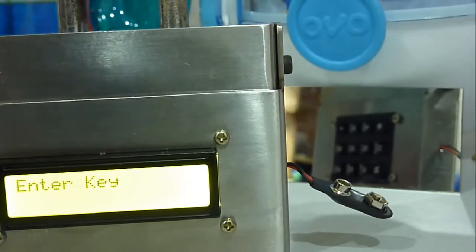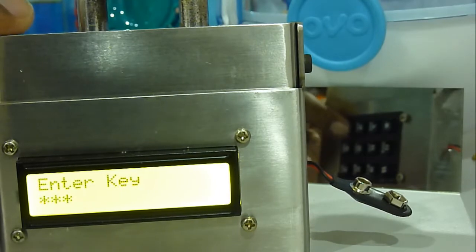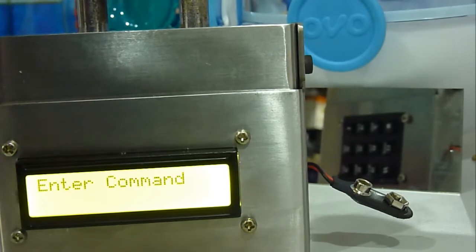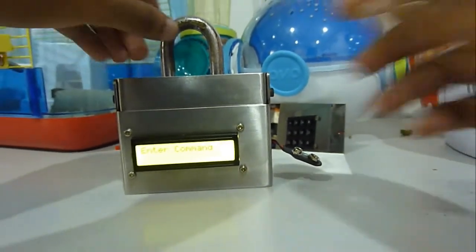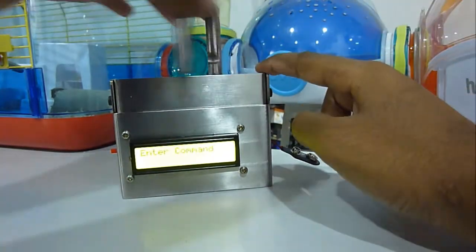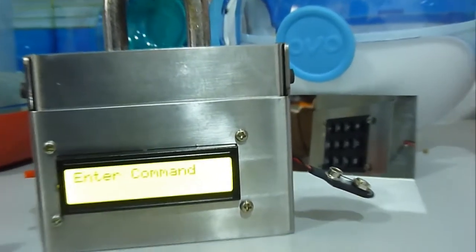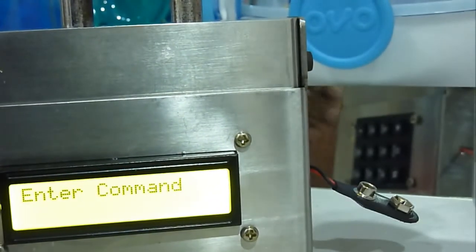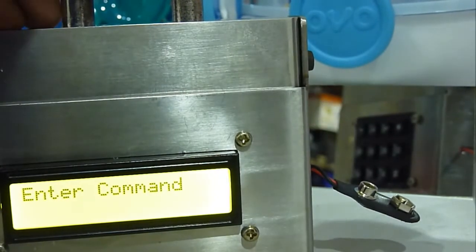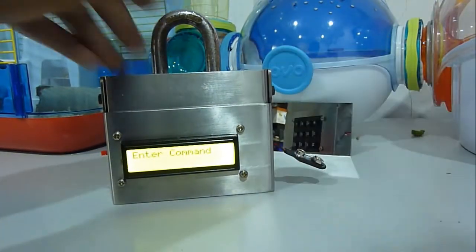So I'll enter the password, the password is all one for now, and it will show a confirmation here after you have entered the password successfully. The padlock is now unlocked and you can lock it again, just put it in and press number two to lock it.